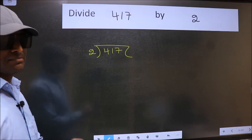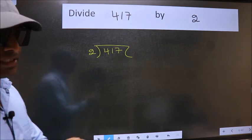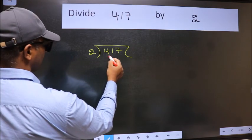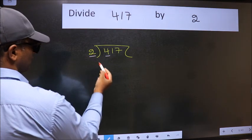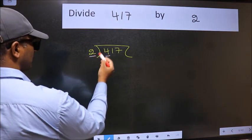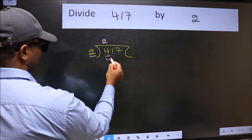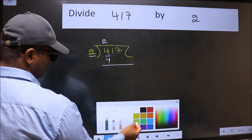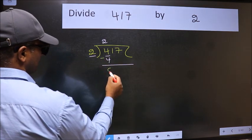This is step 1. Next, here we have 4 and here 2. When do we get 4 in the 2 table? 2 times 2 is 4. Now we should subtract. We get 0.